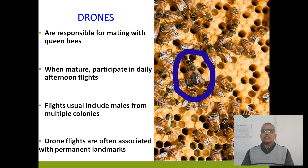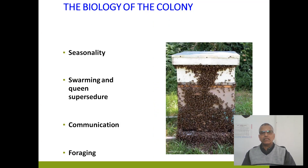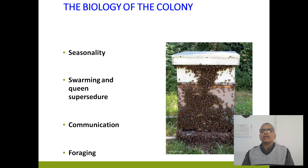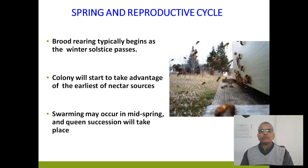Drones are responsible for mating with queen bees. When mature, they participate in daily afternoon flights. Flights usually include males from multiple colonies, and drone flights are often associated with permanent landmarks. Now we will discuss the biology of the colony. The four aspects are: seasonality, swarming, communication and foraging.